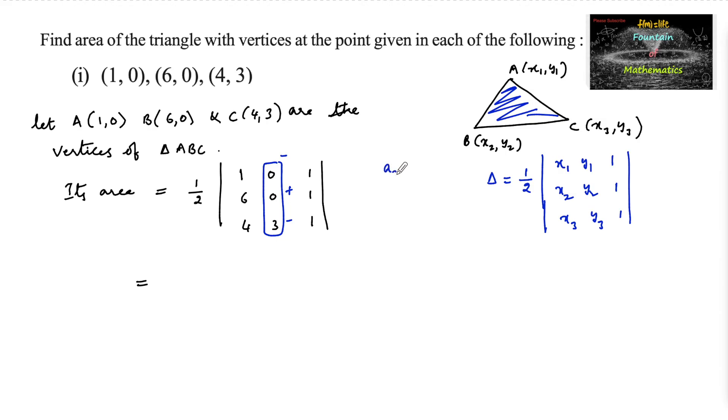1 plus 2 is 3, which is odd, so minus. 2 plus 2 is 4, which is even, so plus. 3 plus 2 is 5, which is odd, so minus.